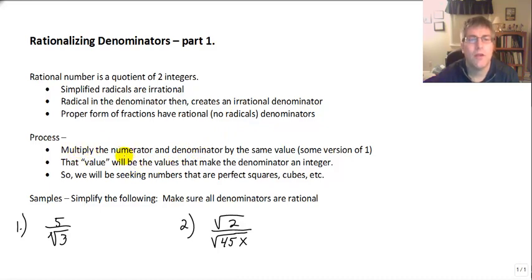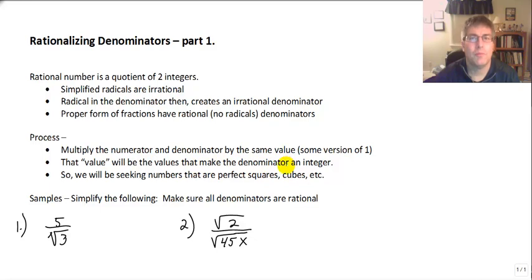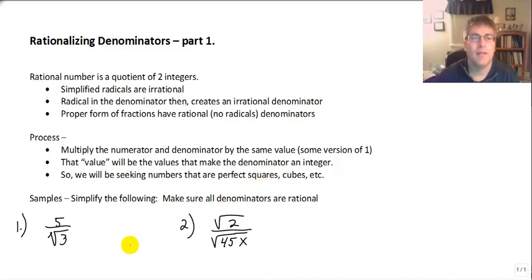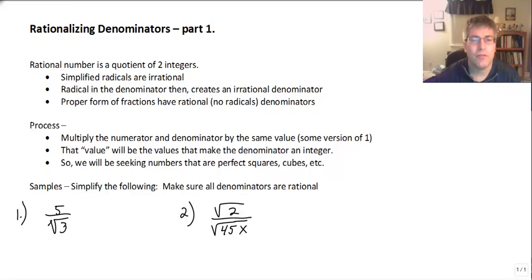Our process to rationalize will be to multiply the numerator and denominator by the same value — some version of one. The key is what that value will be. That value will be what makes the denominator an integer. We are going to be creating perfect squares or perfect cubes in our denominator. With square roots, perfect squares are really simple — anything multiplied by itself is a perfect square. So with square roots, this is pretty straightforward.